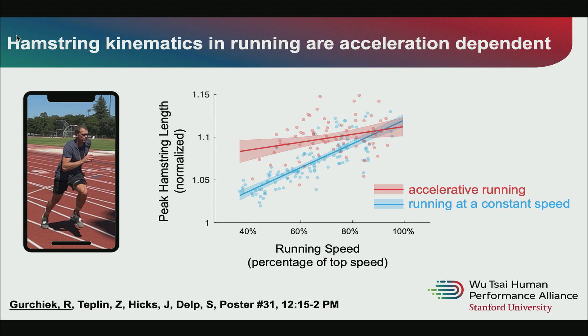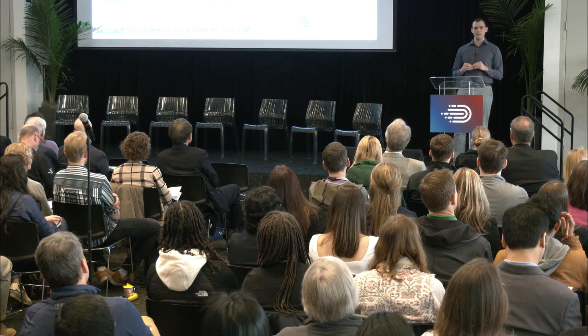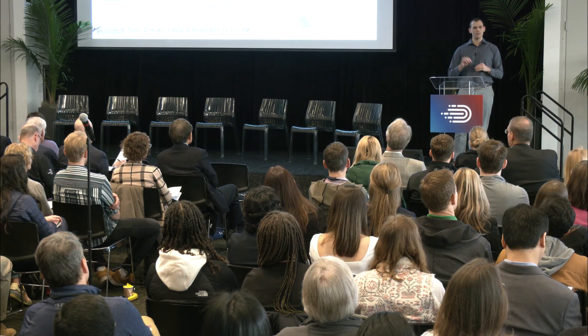I've been studying hamstring strain injuries, which are a big problem for many athletes. It was shown recently that these injuries occur often when athletes are accelerating, not running at a constant speed. We wanted to know why, so we took videos of people using iPhones while they ran at a constant speed and while they accelerated, processed them in OpenCap, and compared the hamstring kinematics between the two tasks.